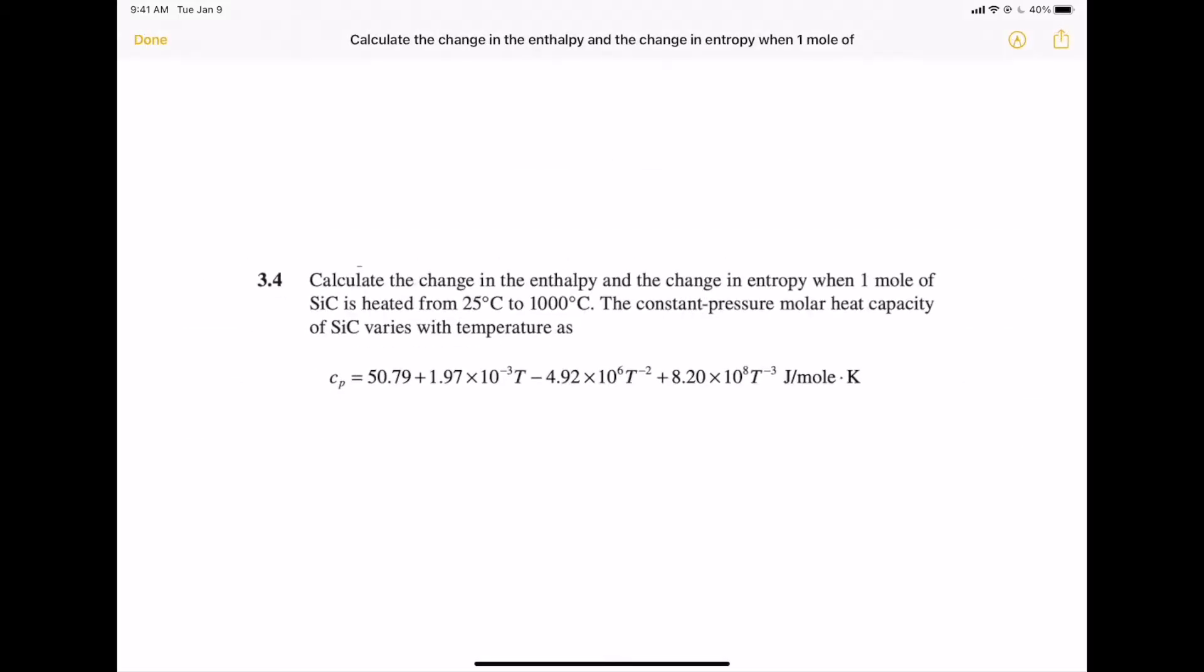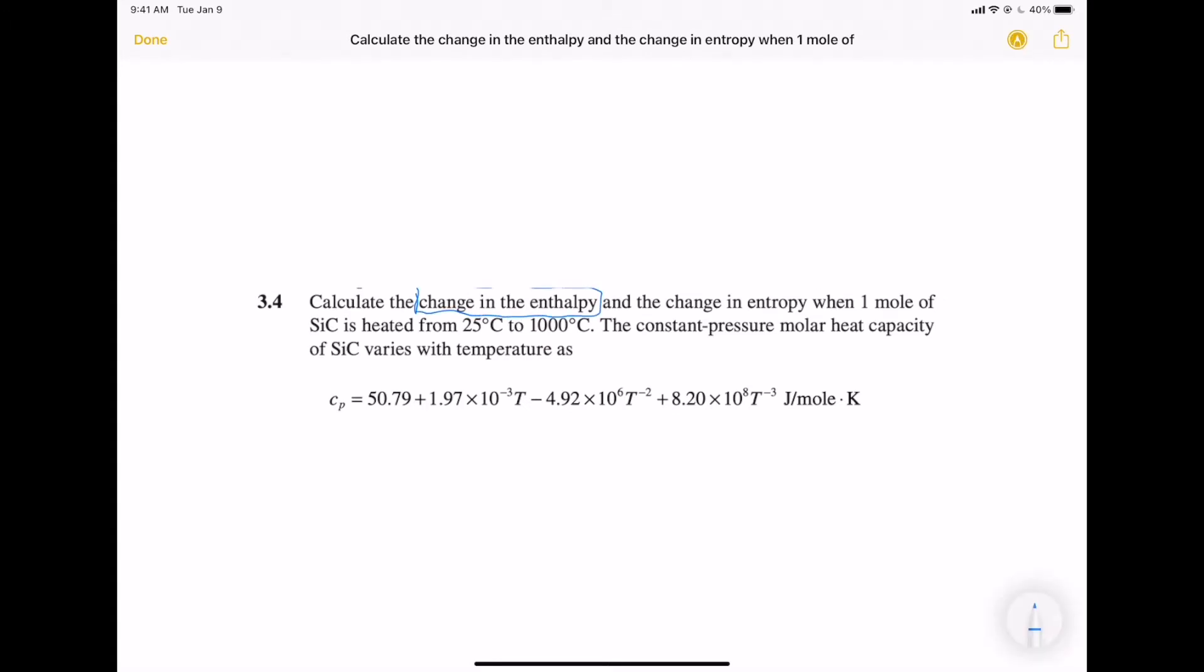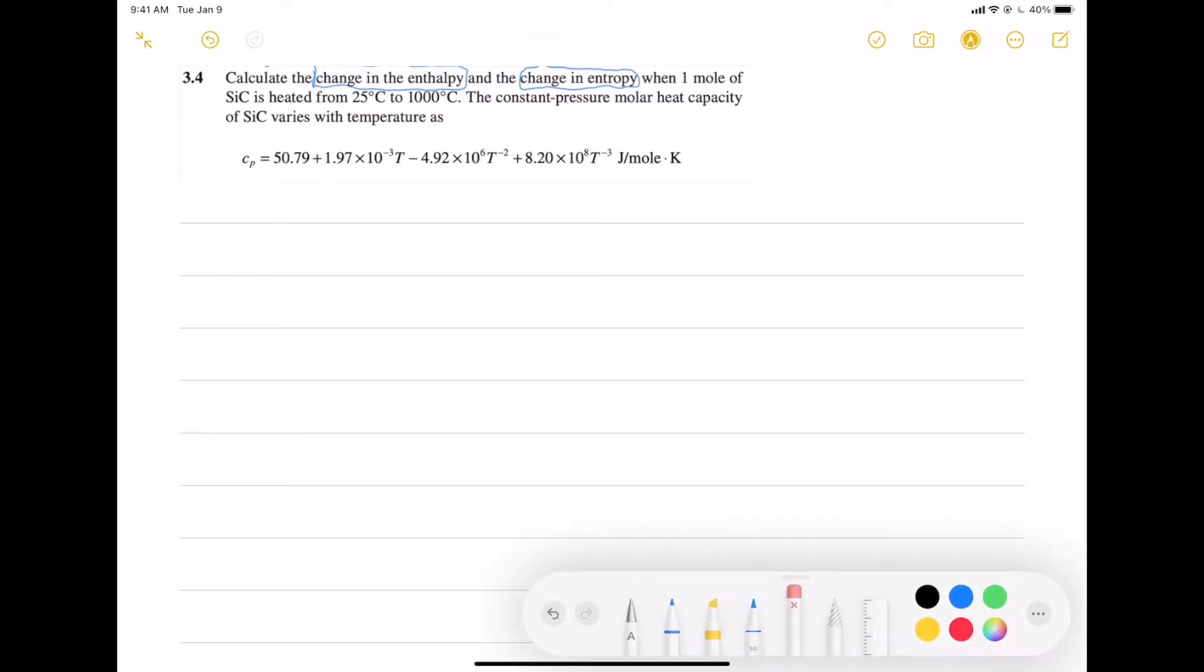In this question, we have to find the change in enthalpy and change in entropy of one mole of silicon carbide and the CP value is given. It is heated from 25 degrees Celsius to 1000 degrees Celsius.